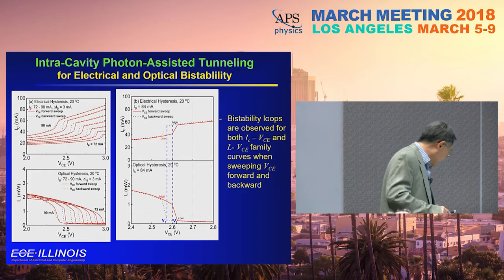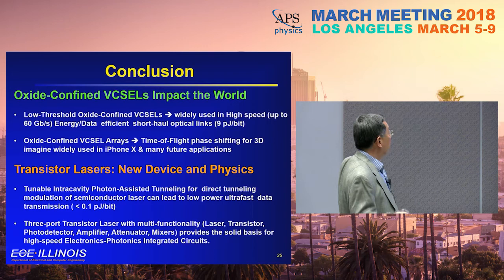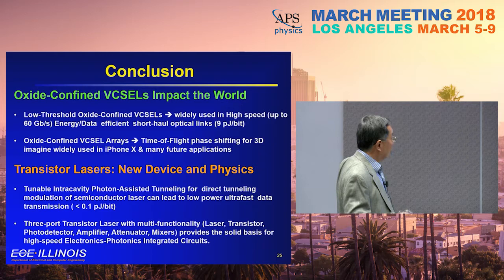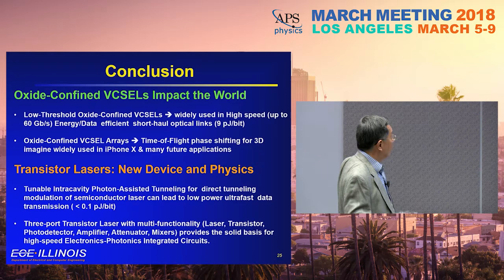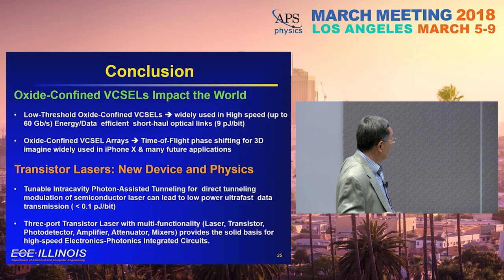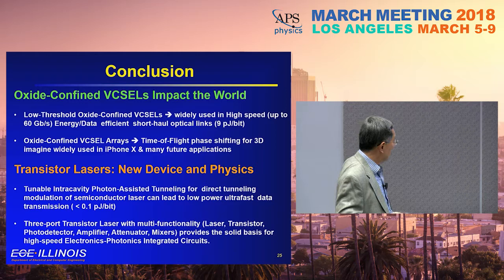In conclusion, oxide-confined VCSELs have impacted the world with low threshold and wide use in high-speed optical links—up to 60 Gb/s consuming approximately 9 fJ per bit, compared to today's industry standard of about 20 to 21 fJ per bit. Oxide-confined VCSELs also find many applications in time-of-flight 3D cameras, such as in the iPhone X, with many more coming. The transistor laser provides new physics through tunneling modulation rather than current modulation alone, and we expect speed to go up considerably, hopefully reaching 0.1 fJ per bit. The three-terminal transistor laser with multifunctionality probably sets the basis for a high-speed electron-photon integrated circuit.